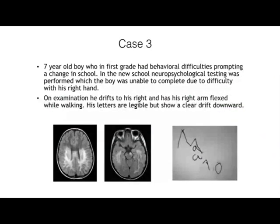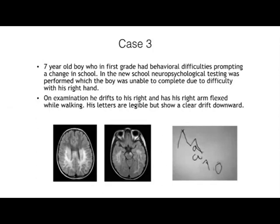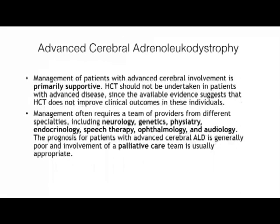Our last case is that of a seven-year-old boy who in first grade had behavioral difficulties prompting a change in school. In the new school, no psychological testing was performed, as the boy was unable to complete it because of difficulty with his right hand. On examination performed remotely, he was holding his right arm flexed and walking with a drift towards the right, with legible but downward-drifting letters. This is a case of advanced cerebral ALD, and I close with this to remind people that advanced cerebral ALD sadly still occurs despite newborn screening, and here bone marrow transplantation is not indicated.